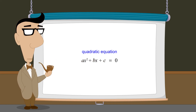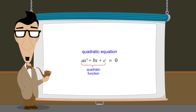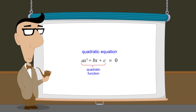This equation states that the value of the quadratic function ax-squared plus bx plus c must be zero. So the solutions to this equation are those values of x that cause the quadratic function to produce a value of zero. These x-values are called the zeros or roots of the function.